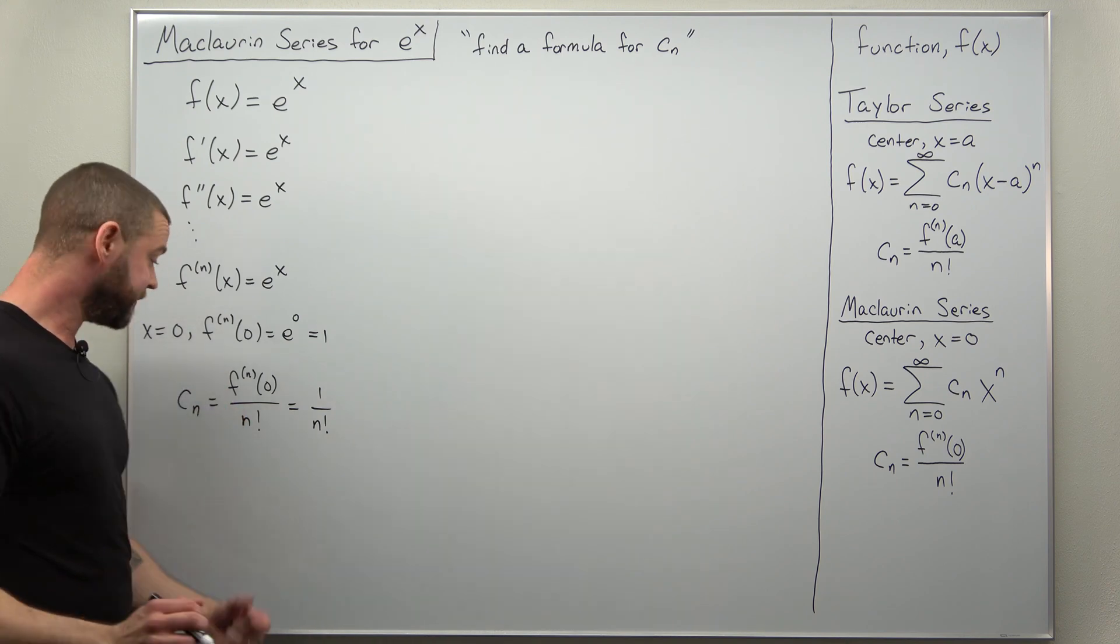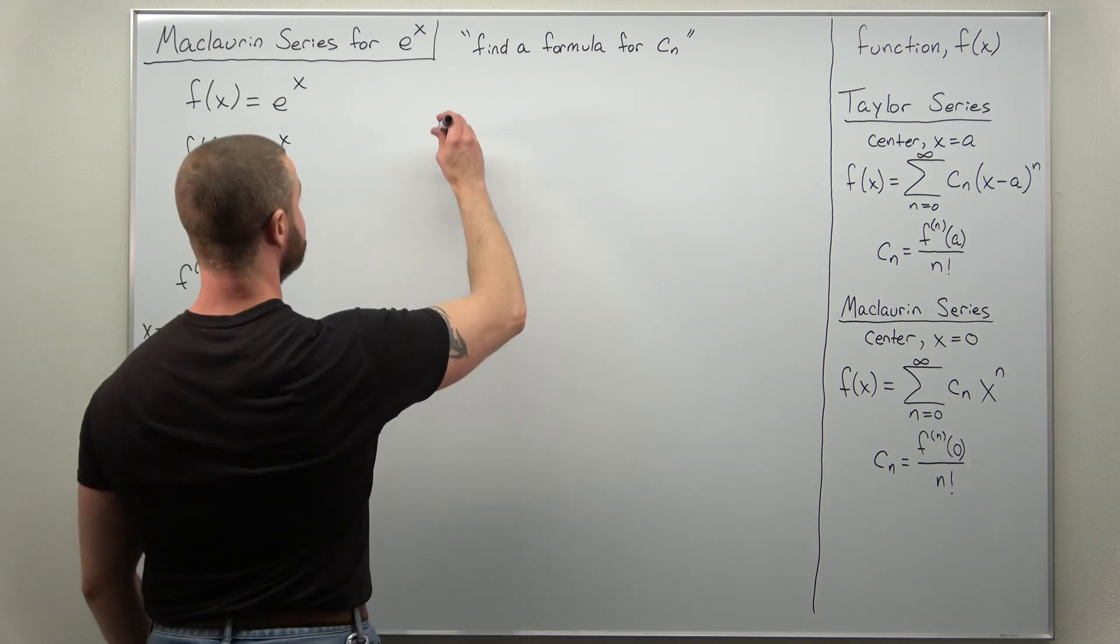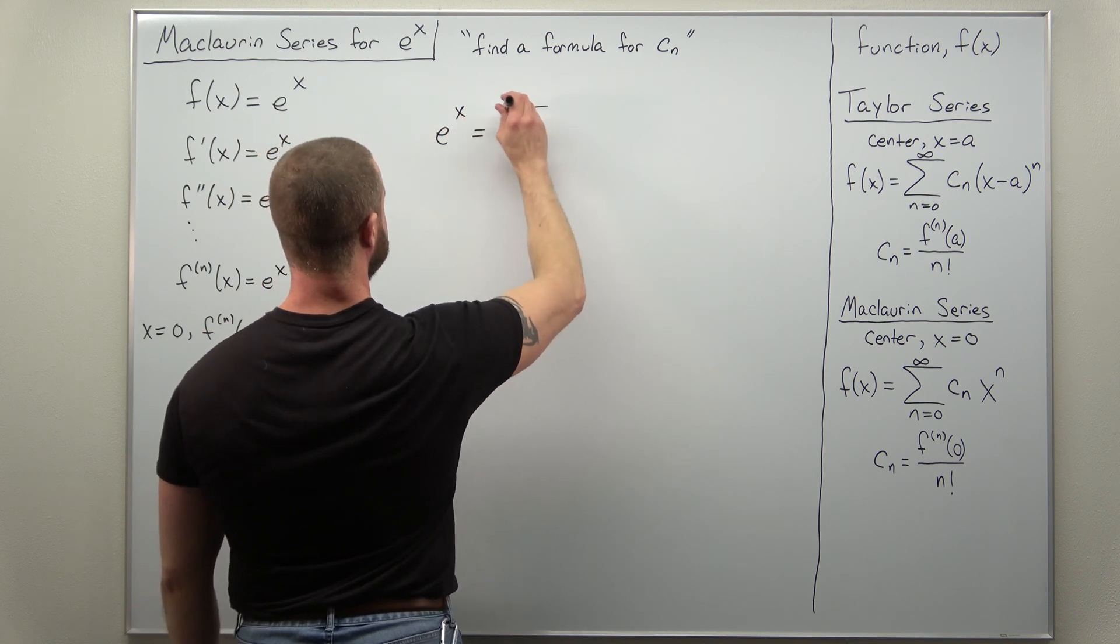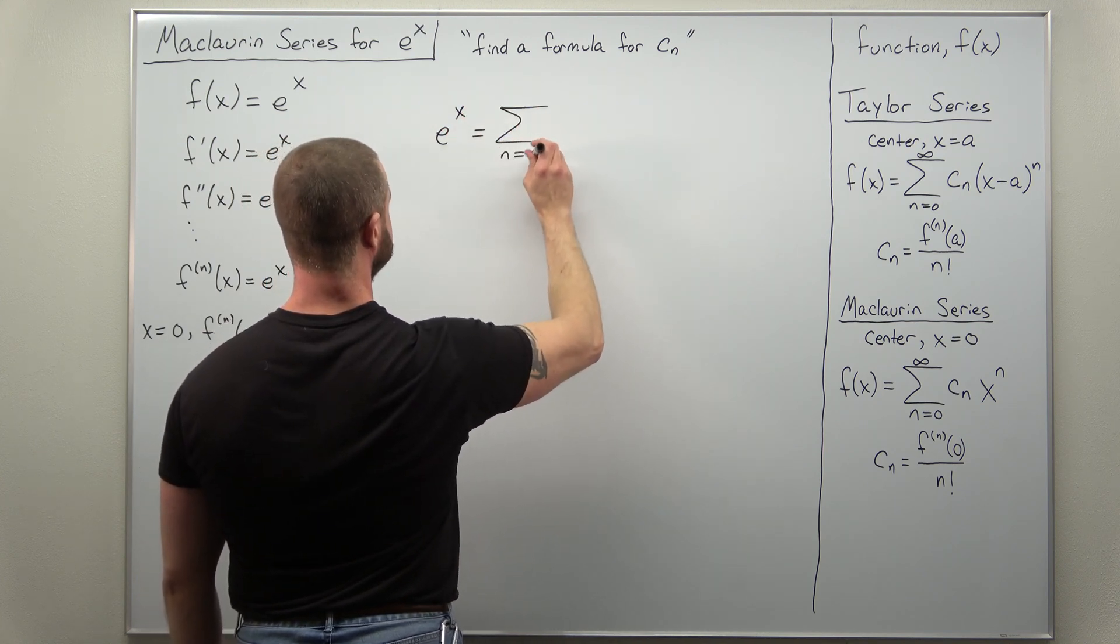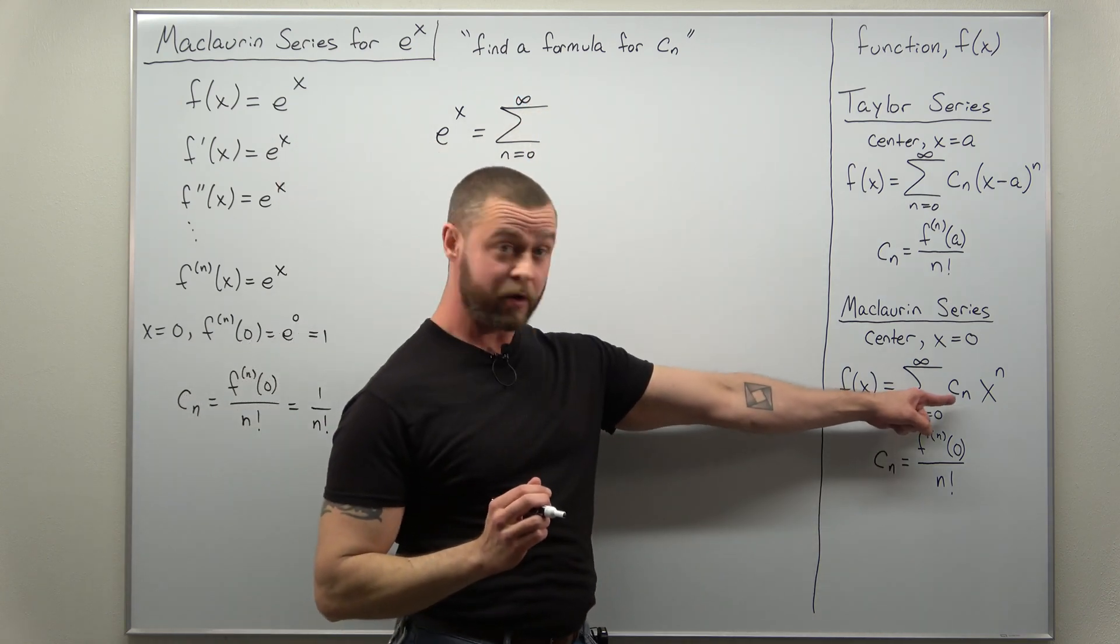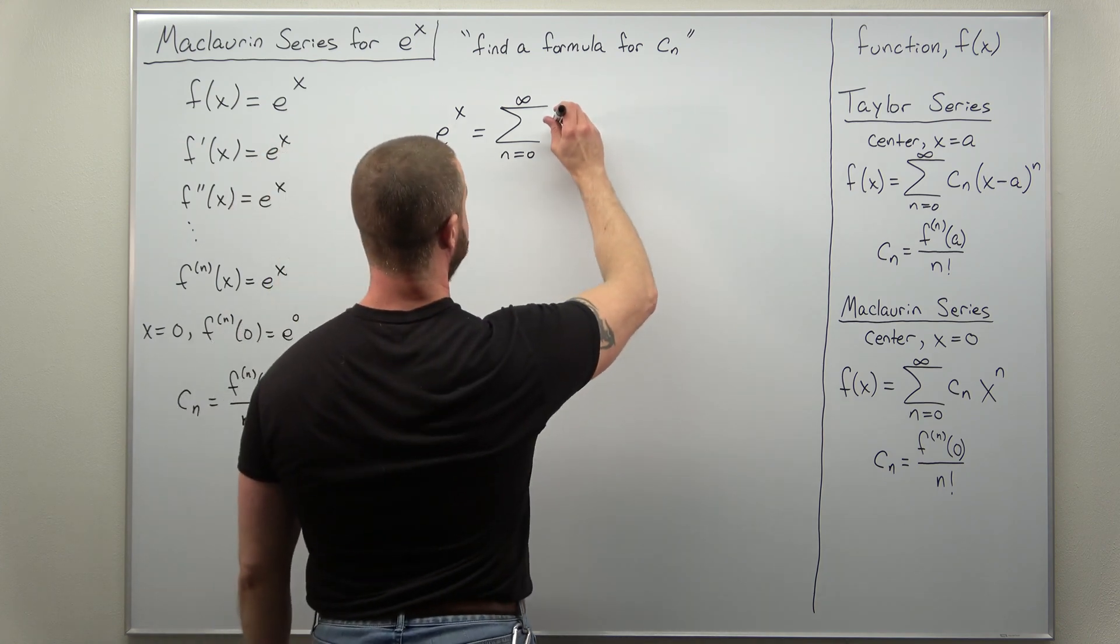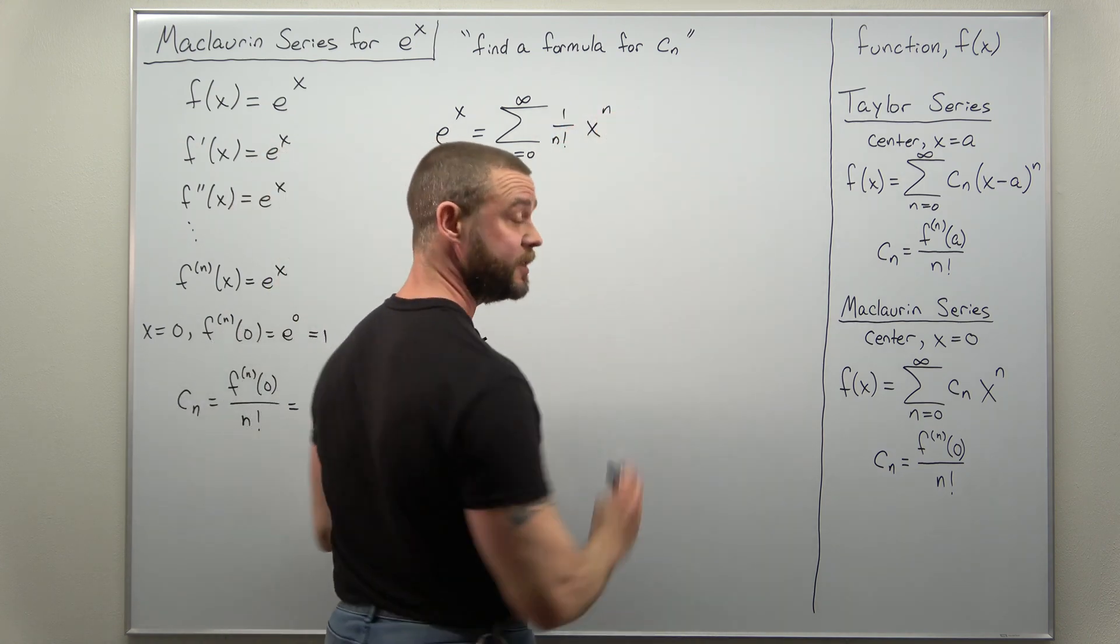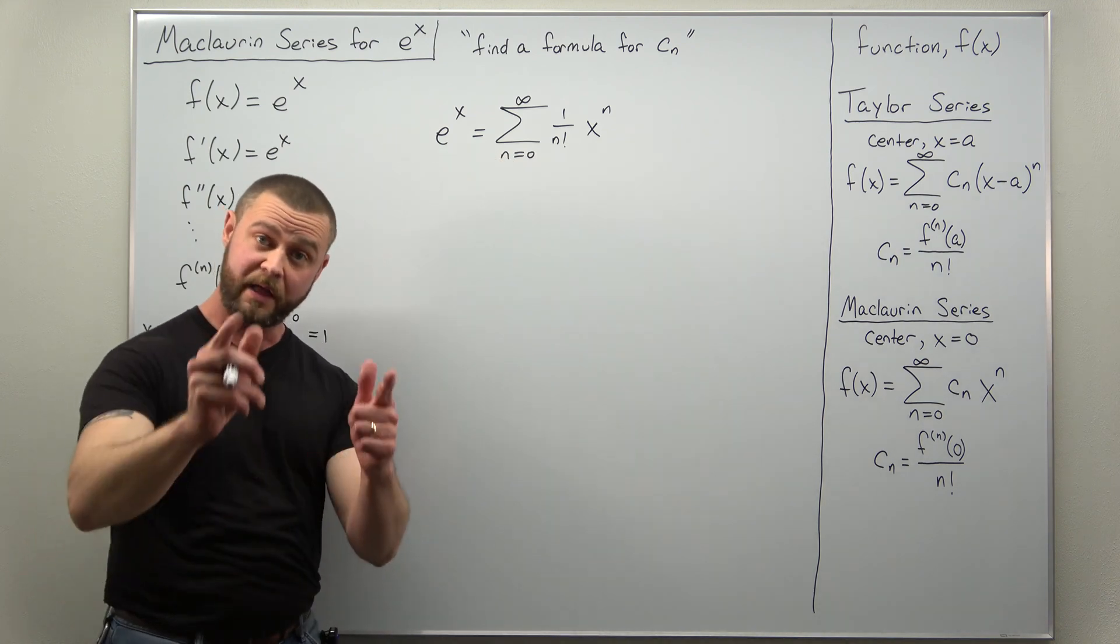That's our formula for the nth coefficient and we can just plug it in and get our Maclaurin series for e to the x as the sum from n equals zero to infinity. We have our coefficient determined as one over n factorial and that multiplies x to the n, and that's it.